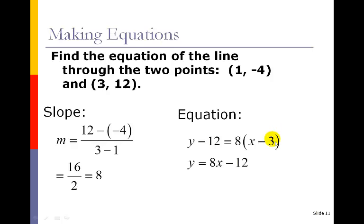And so then I've got y minus the y value of the point equals the slope times x minus the x value of the point. So that's the setup. And then what I did is I brought that 8, multiplied it through, so I got 8x minus 24.